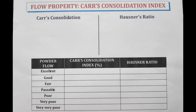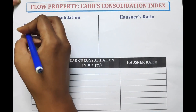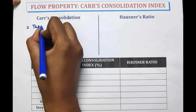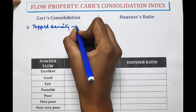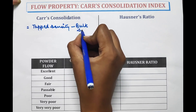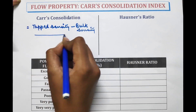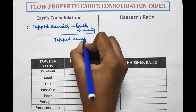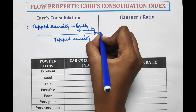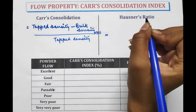Another measurement for flow property is Carr's consolidation index, also known as Carr's index or compressibility index. The formula for Carr's index is: tapped density minus bulk density, divided by tapped density, multiplied by 100. It has no unit. Hausner's ratio is calculated by tapped density divided by bulk density, and Hausner's ratio also has no unit.